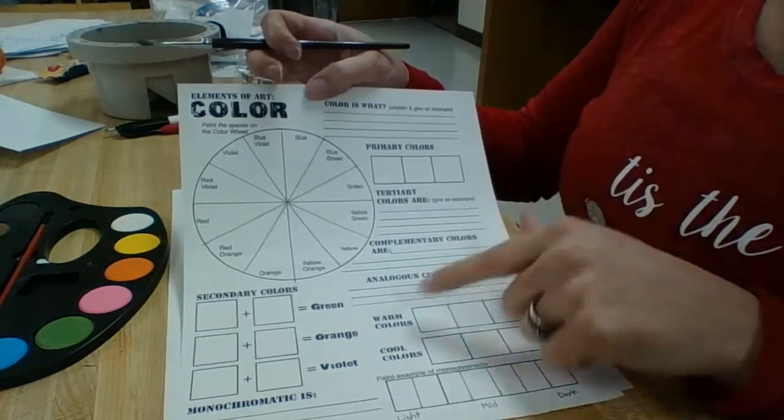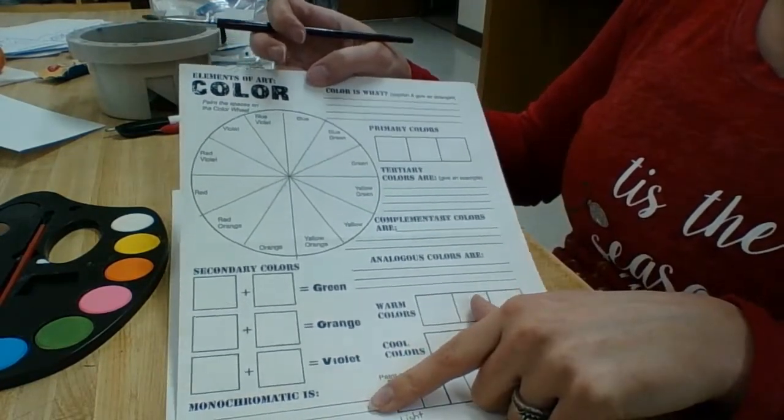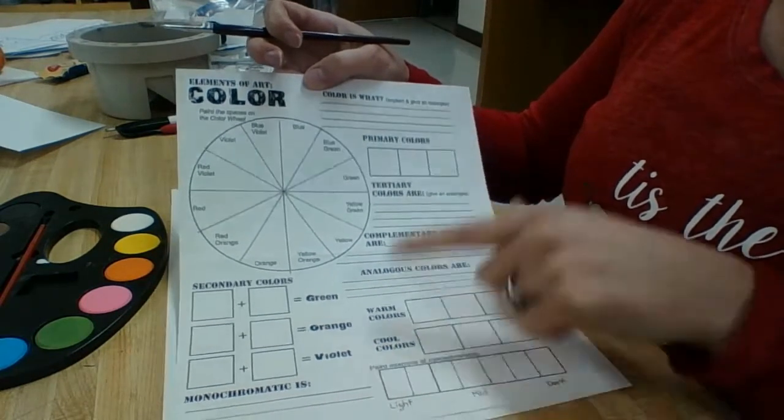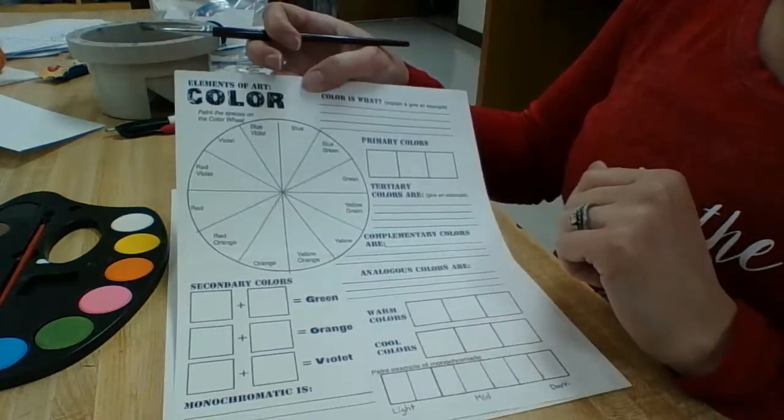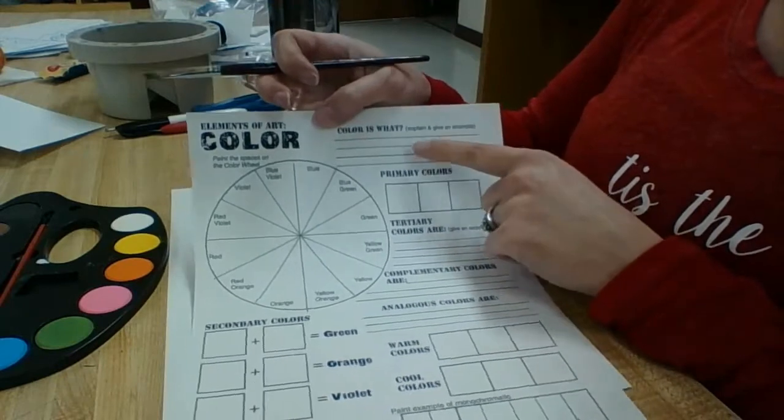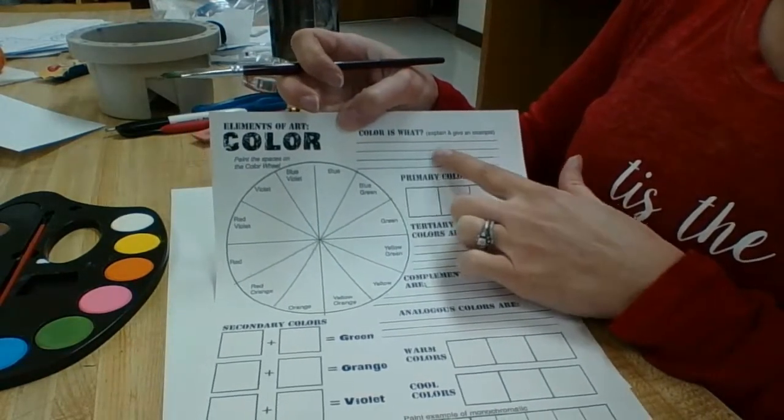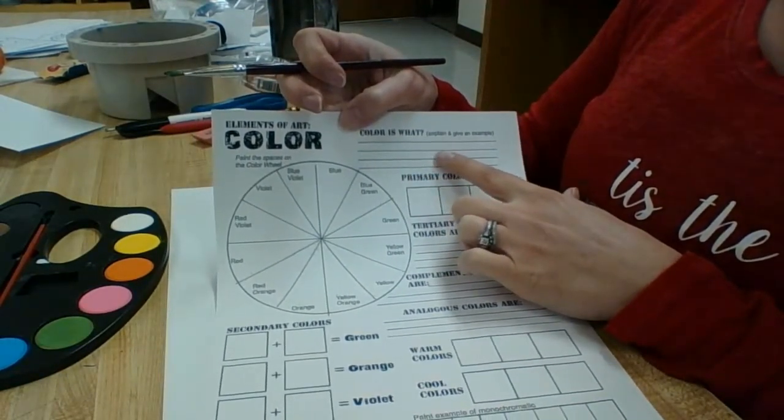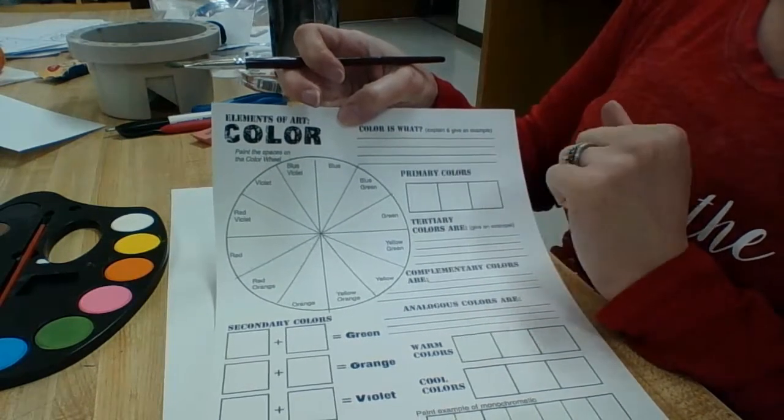If you go through the PowerPoint that is on Schoology, they basically give you the answers right there. And actually I'll give you the answer to the first one. What is color? Color is basically reflected light. So that could be your first answer.